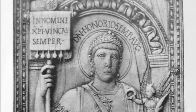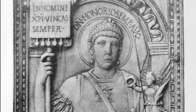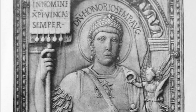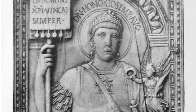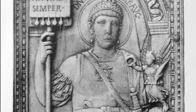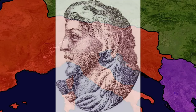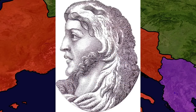Stilicho's successors committed a serious blunder in late 408 when they incited mobs to massacre the families of the Germanic soldiers of the army of Italy. Outraged, the Germanic Federati deserted en masse to Alaric, who, with his enlarged army, invaded Italy and besieged the city of Rome itself.